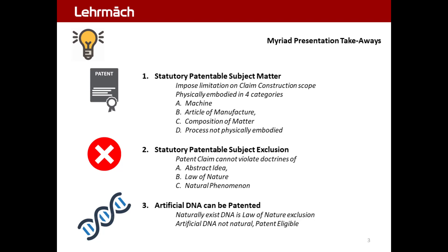1. Statutory patentable subject matter. Impose limitations on patent claim construction scope in the application submitted to the U.S. Trademark and Patent Office, in documenting what is the specific transformative innovation and how it is to be replicated by the general public in that industry or art once the patent grant expires.